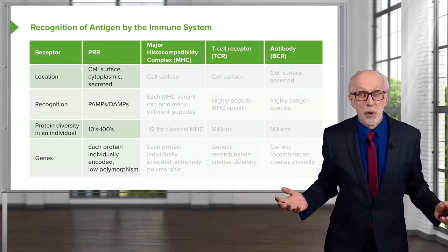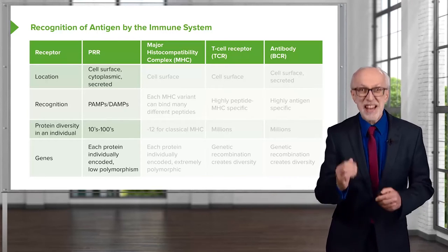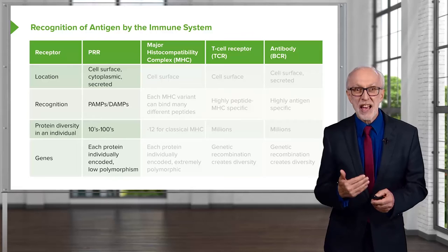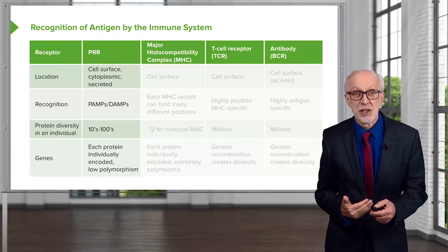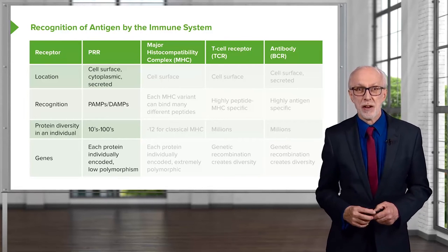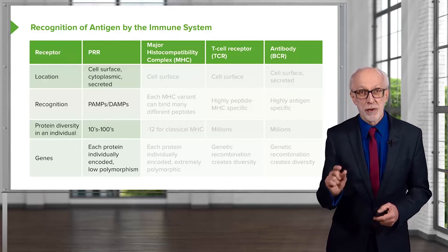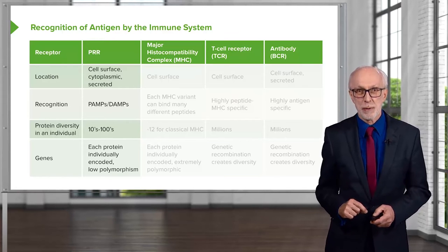So for a given pattern recognition receptor, let's say TLR4, probably your TLR4 is exactly the same as mine. In other words, they have low polymorphism at the genetic level — they don't vary from one individual to another for each individual pattern recognition receptor.